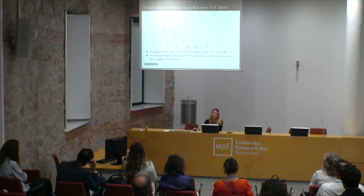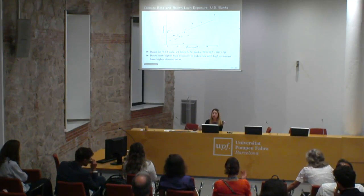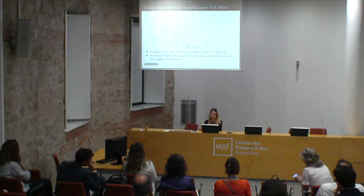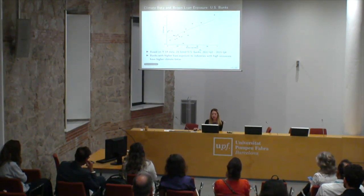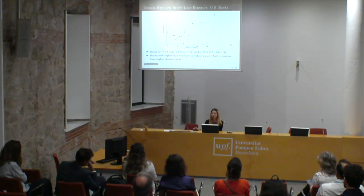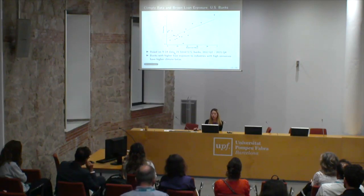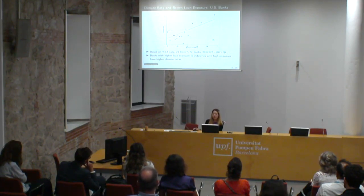We looked at the relationship between climate beta and brown loan exposure. The bin scatter plot shows climate beta on the y-axis and brown loan share on the x-axis. We define brown loan share as the share of loans made to borrowers in the top 30 industries by carbon emissions, based on Y14 data with granular information on loan portfolio holdings of large banks. The relationship is positive: banks with higher loan exposure to high-emission industries have higher climate betas.